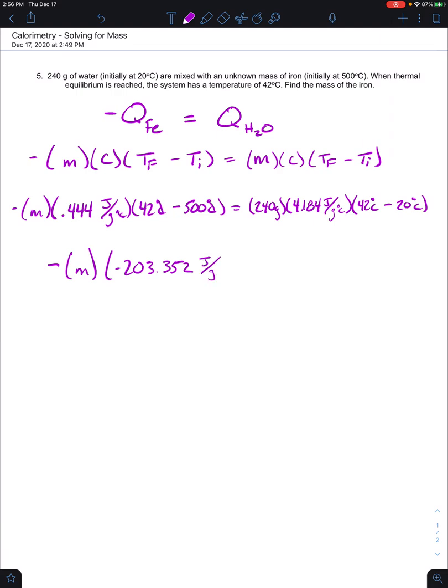which is equal to, we can combine all of these terms. So 240 times 4.184 times 22, all of those were like terms on the right side of the equation. So we knew that we could combine all of them. We get 22,091.52. The grams are going to cancel, the degrees Celsius are going to cancel, and we are going to be left with joules.